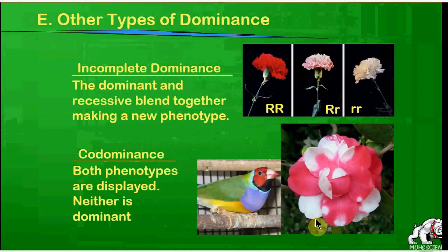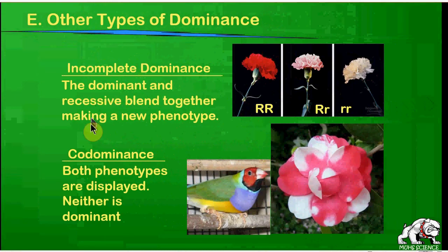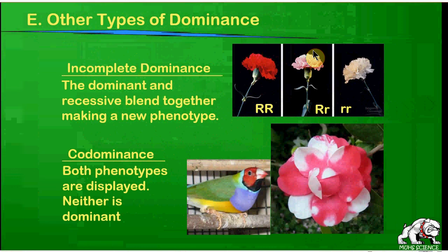We now understand complete dominance — it's where one gene completely overrides the other. But there are other types of dominance. There's a type called incomplete dominance. Looking at these carnations, this is where the dominant and recessive traits can blend together to make a new phenotype. Capital R is for red petals, lowercase r is for white petals, but when you have big R, little r, you get pink petals — the red is not completely dominant. This is incomplete dominance.